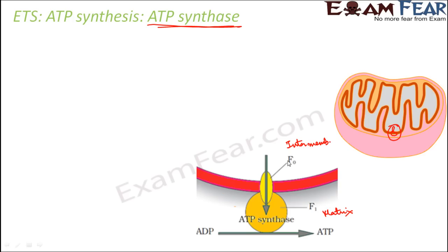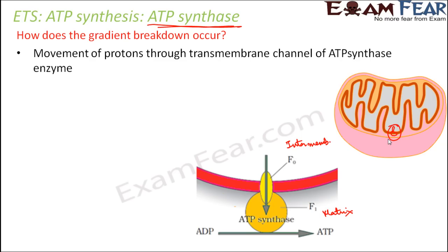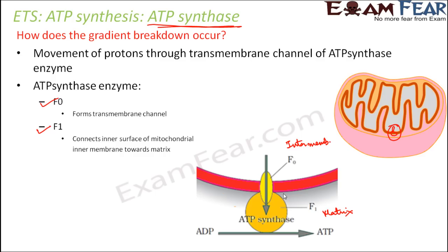The gray color part is the matrix and the white or pink color part represents the inter-membrane space. Now how does the gradient breakdown occur and how do the protons start to flow across the membrane? Movement of protons occurs through the transmembrane channel of the ATP synthase enzyme. This enzyme has two parts: F0 and F1. F0 is the part which forms a transmembrane channel — a tunnel-like structure through the membrane — allowing protons to flow through it. F1 connects the inner surface of the mitochondrial inner membrane towards the matrix.